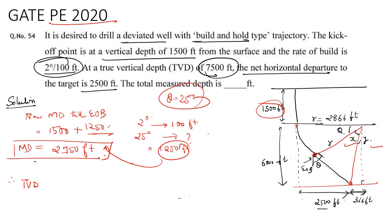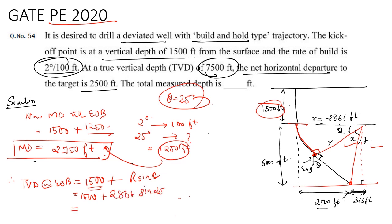Now to calculate the TVD at the end of build, I would be using 1500 plus, assuming this particular section as a right angle triangle. To calculate TVD from this right angle triangle, that will be equal to 1500 plus R sine theta — so 1500 plus 2866 times sine of 25 — giving 1500 plus 1211 which equals 2711 feet. This is my TVD. So I got my TVD and measured depth at end of build.